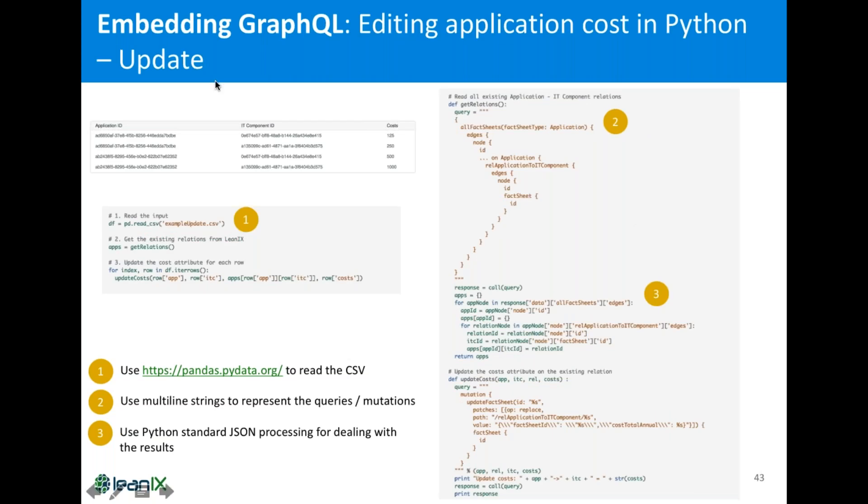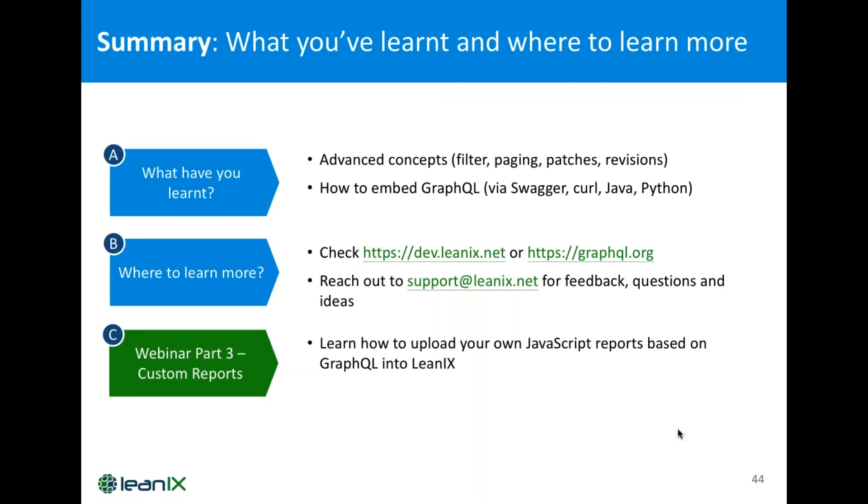And, as a similar example, you could also work with an update. So, in this case, you have LeanIX IDs for the application given, because you created them, for example, via Excel importer before, and also for the IT component. And, again, it's costs. And, again, you read the CSV, you receive the existing relations, because you assume they are there, and you update the cost. So, checking how this function would look like. The getter is a bit more complex, because it looks on the application and on the relation, and returns the relation. So, here's parsing from the result. While the update is an update fact sheet mutation, and you learned about patches, how to put them here. So, it's replace. It will take the ID of the relation, which is this one, and it will provide the fact sheet ID and the cost and the value.